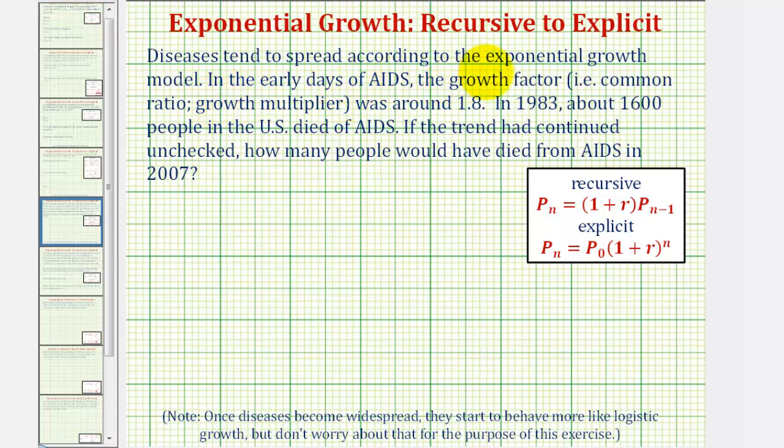Diseases tend to spread according to the exponential growth model. In the early days of AIDS, the growth factor, also known as the common ratio or growth multiplier, was around 1.8.